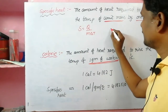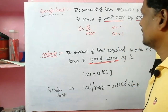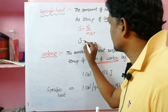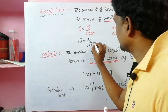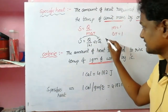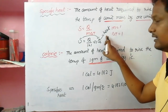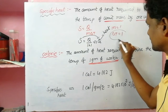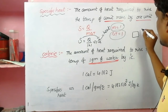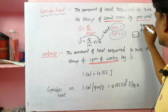S equals Q divided by m delta T. If unit mass means m equals one, and delta T equals one degree, then S equals Q divided by one into one, which equals Q. So specific heat equals the heat Q required to raise the temperature by one degree of unit mass.